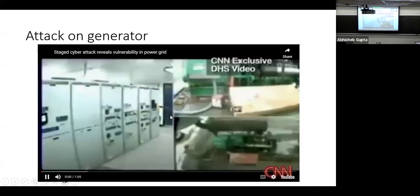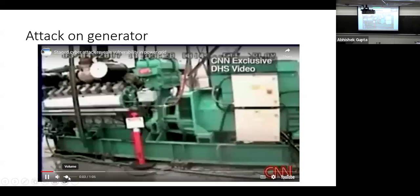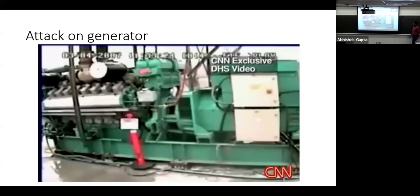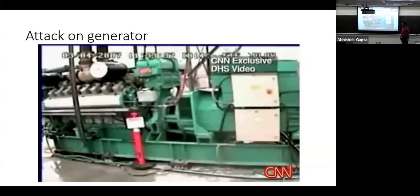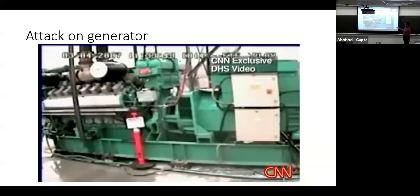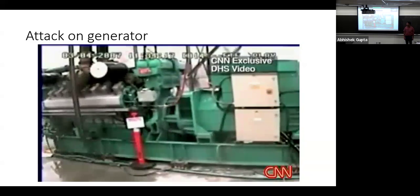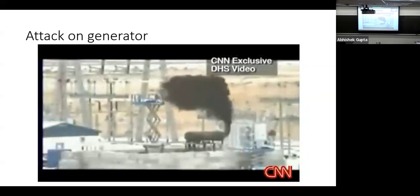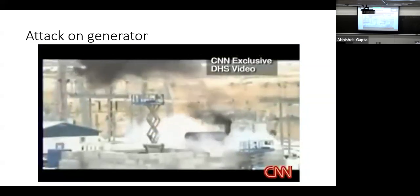Here is an attack done by the Department of Homeland Security around 2007. They took a defunct generator — one that no longer worked — and decided to attack it to see what harm they could cause. They attacked it, destabilized the generator, and it failed. The biggest learning from that DHS video was that this is very much possible just by sitting remotely, knowing a lot about the generator, and launching a cyber attack.